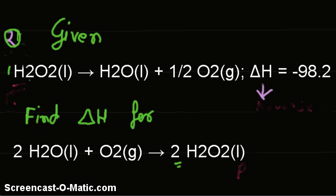In this given equation, decomposition of hydrogen peroxide, the enthalpy is minus 98.2, and we have to find the delta H for the following reaction.